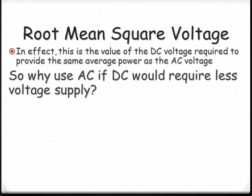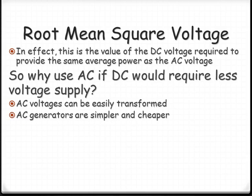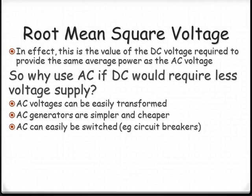So why do we use AC if DC requires less voltage? One of the things we looked at last screencast was that it's much easier to transform AC than DC. The changing flux allows it to easily be manipulated. AC generators are also simpler and cheaper to make and run. We can easily use AC to switch things like circuit breakers and it's much easier to convert AC to DC than the other way around.